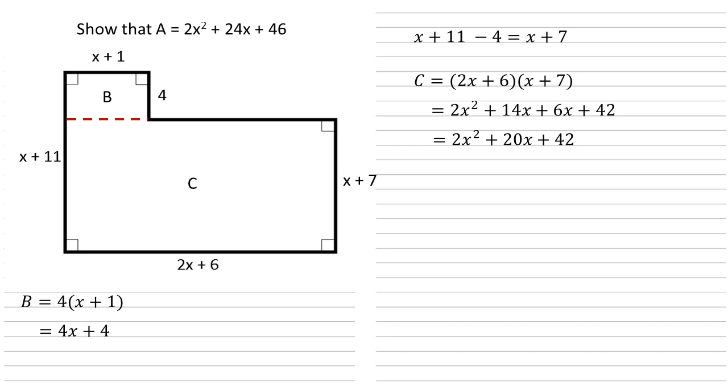Now as our whole shape A is made up of B and C we can now add our two areas together. So we've got 4x plus 4 from B, add 2x squared plus 20x plus 42 from C. Simplifying this gives us 2x squared plus 24x plus 46 as required.